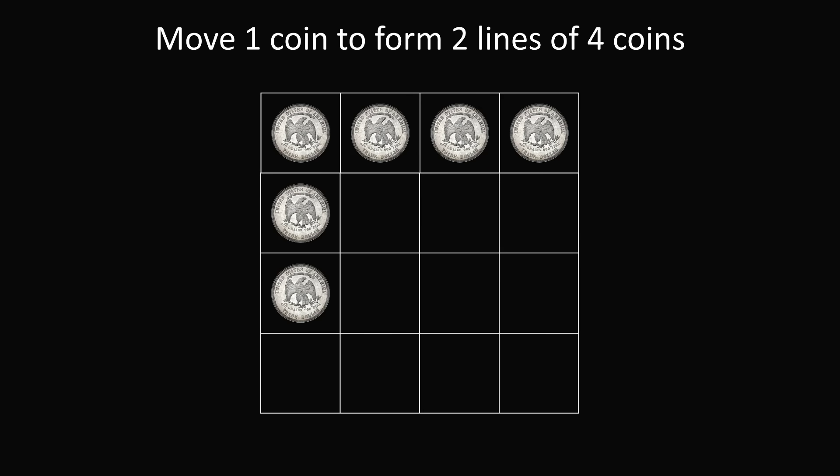Puzzle 3. Here's a 4x4 grid. Fill up coins in the first row and in the first column of the second and third rows. The challenge is to move just one coin to form two lines of four coins. Once again, this puzzle seems impossible. Imagine one line of coins in the first row and one line in the first column, reusing the upper-left coin — even then, these two lines will cross seven squares, but we only have six coins. So it will be impossible unless we think outside the box.